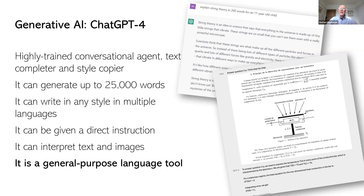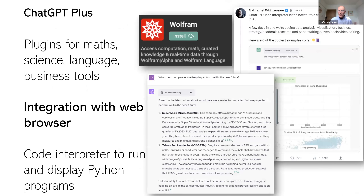On the right-hand side of my slide, you can see an exam question in French, although the prompt is in English, with an illustration. It can interpret not only the text but also the illustration to answer that question. It's a general purpose language tool. And more recently, there have been extensions to GPT — ChatGPT Plus — with plugins from third-party companies for maths, science, and language business tools. For example, the Wolfram mathematics engine can now be linked in to ChatGPT.